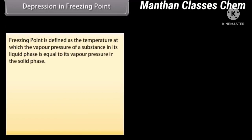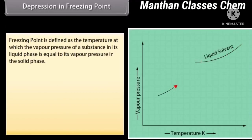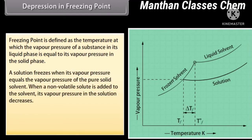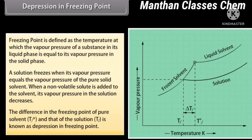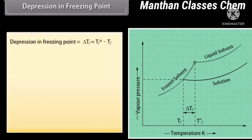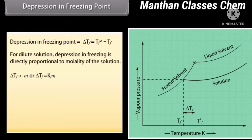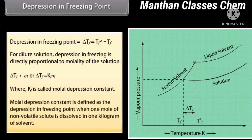Depression in Freezing Point: Freezing point is defined as the temperature at which the vapor pressure of a substance in its liquid phase equals its vapor pressure in the solid phase. A solution freezes when its vapor pressure equals the vapor pressure of the pure solid solvent. When a non-volatile solute is added, the vapor pressure in solution decreases. The difference in freezing point of pure solvent and the solution is the depression in freezing point, denoted ΔTf = Tf° − Tf. For dilute solutions, depression in freezing point is directly proportional to the molality. Kf is the molar depression constant, defined as the depression in freezing point when one mole of non-volatile solute is dissolved in 1 kg of solvent.